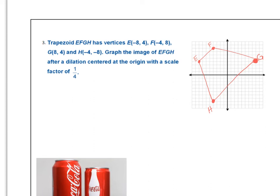Here is my pre-image trapezoid EFGH. And now I want to send it through a dilation centered at the origin with a scale factor of 1/4. I can either multiply by 1/4 or divide by 4. So E prime is going to be -8 divided by 4 is -2. And 4 divided by 4 is 1.